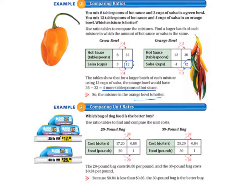So our cost for the 20 pound bag is $17.20 and our cost for the 30 pound bag is $25.20. So for the 20 pound bag we divide $17.20 by 20 and we find out that the cost per pound is $0.86. And then with the 30 pound bag we divide $25.20 by 30 and we find out that the cost is $0.84 per pound.